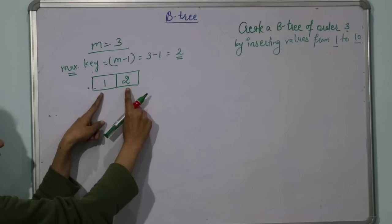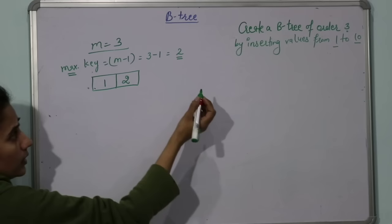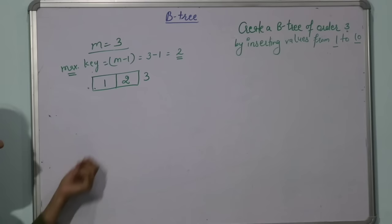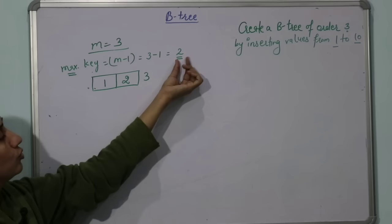Key 1 would be less than key 2. If you have key 3, then key 2 would be less than key 3 and greater than key 1. Now see, next is 3. You are supposed to insert 3, but if you insert 3, in that case how many keys are there in this node? 3 keys.